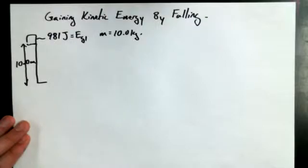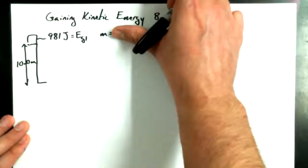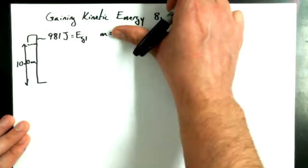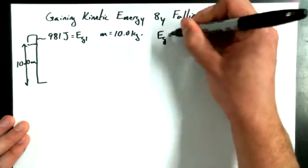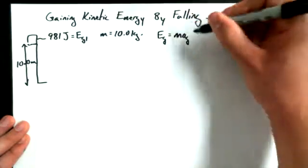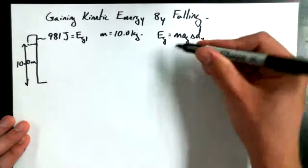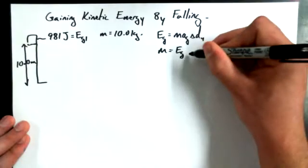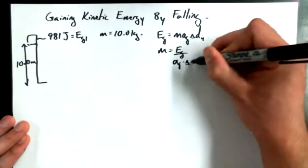Actually, I didn't even have to tell you it was 10 kilograms. How could I figure out what the mass is without telling you? Let's pretend I never told you. EG is equal to mass times acceleration to gravity times delta DY. I could get M all by itself. M is equal to EG over.